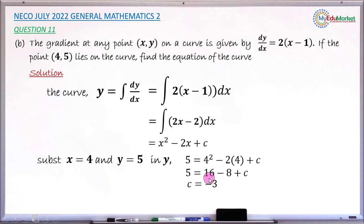So this is now the constant of integration. So you can now write the exact function y, because you have the value of c. So now go back to this y equals x squared minus 2x plus c. Instead of plus c, you now put minus 3 there, so that you now have the exact equation or exact curve.